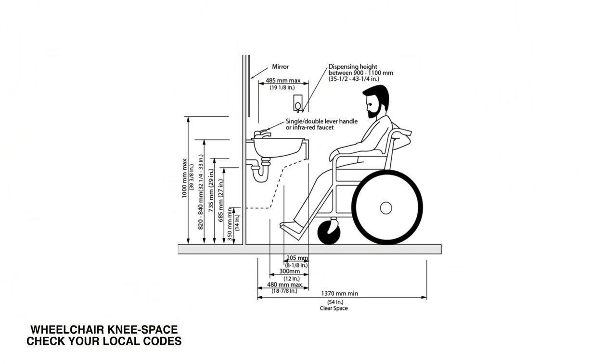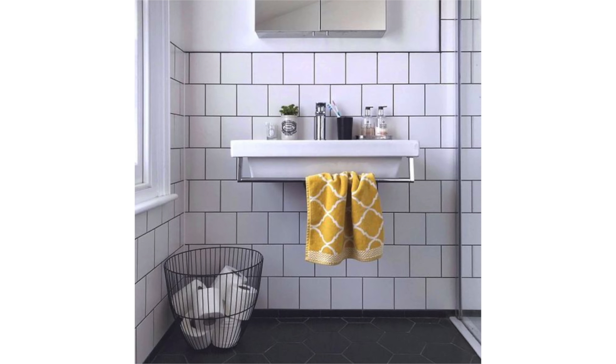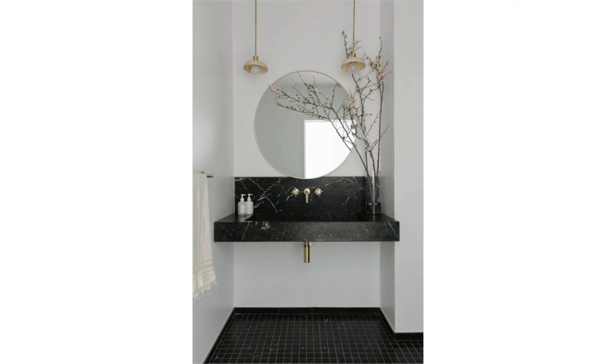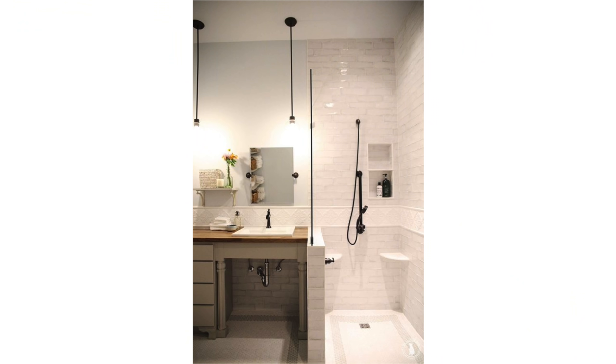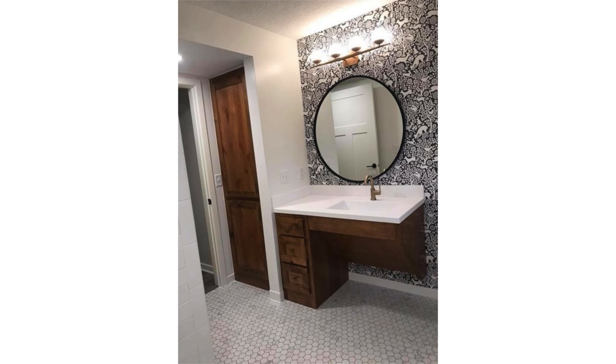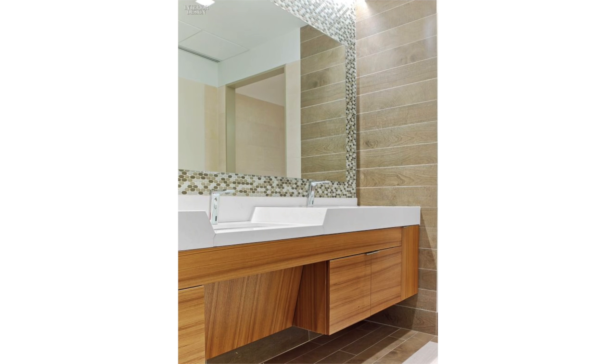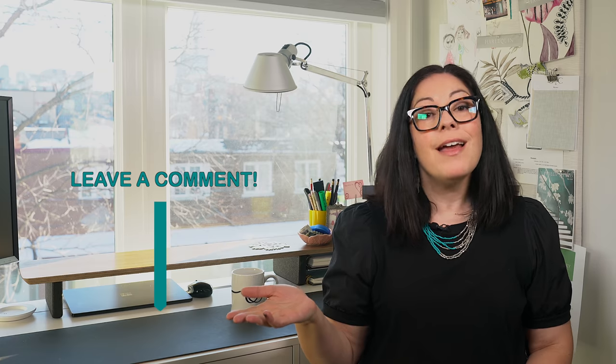Another key aspect of wheelchair access is knee space, particularly at the sink. There are many ways to design your bathroom vanity with an open space below the sink instead of cabinet storage. Wall-mounted sinks are a great way to keep the space feeling as open as possible, or you can create floating sinks with your counters and cabinetry. Incorporating knee space into your cabinetry provides that open space while still giving you the look of a vanity — some even with protected pipes look quite nice.